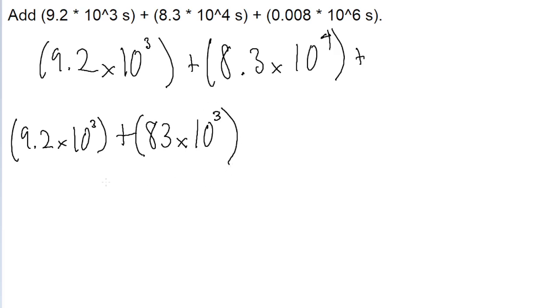So now we're in a position where if we wanted to add these two numbers together, all we'd have to do is just add 83 plus 9.2, and then just slap on the times 10 to the power of 3 at the end.